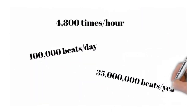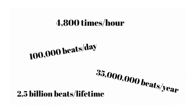Some amazing numbers: the heart beats 4,800 times per hour, 100,000 beats per day, 35 million beats per year, and 2.5 billion beats in a lifetime. Your heart is constantly pumping — the right and left ventricles constantly pumping blood to the lungs and the systemic circulation respectively — and the basis of that are the myocardial autorhythmic cells.